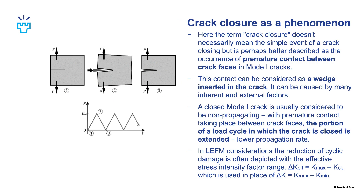We will start off by looking at crack closure as a phenomenon. The term crack closure doesn't necessarily mean the simple event of an open crack closing, but it is perhaps better described as the occurrence of premature contact between crack faces in mode 1 cracks. This contact can be considered to behave like a wedge that gets inserted in the crack, and it is caused by many inherent and external factors.